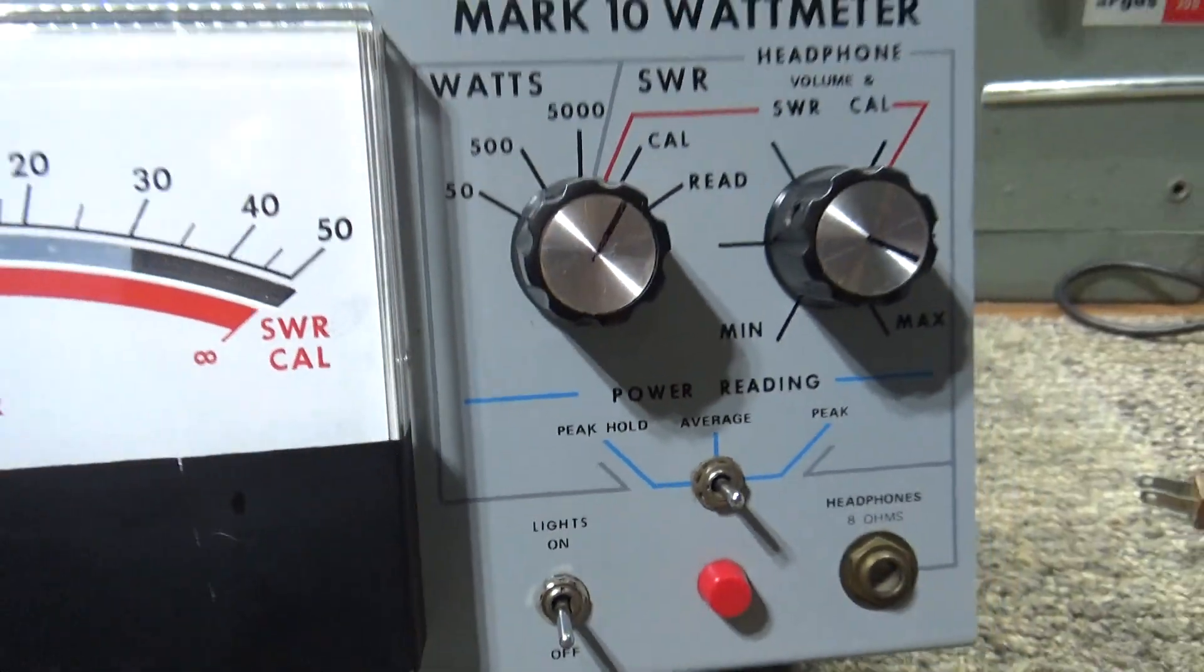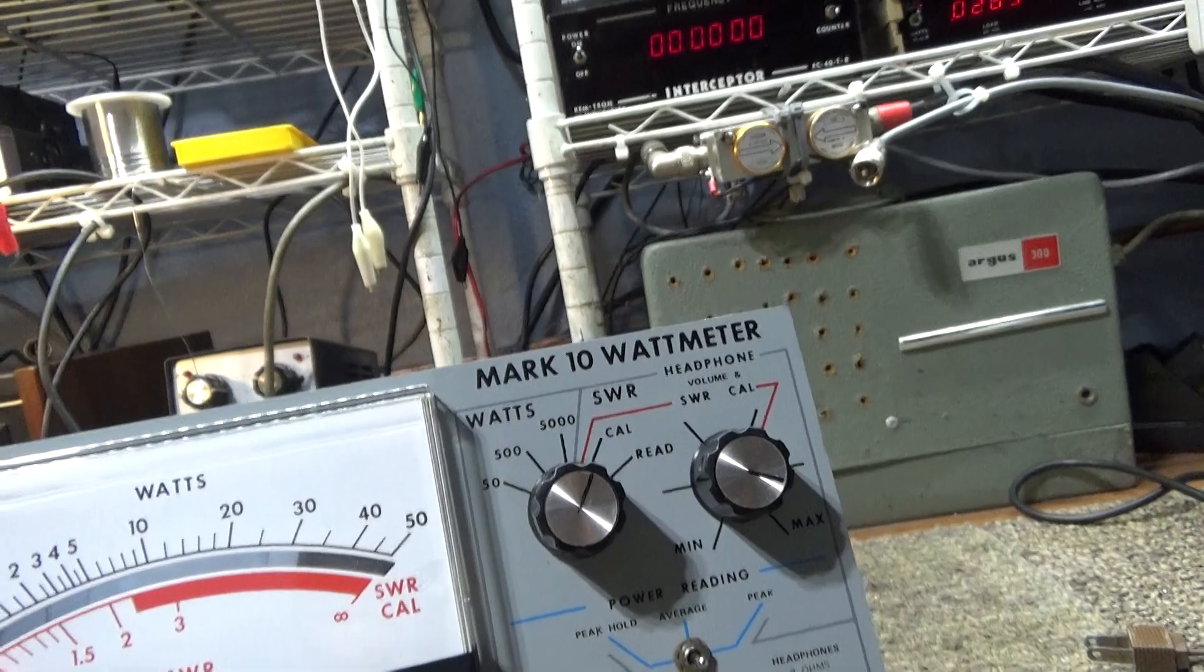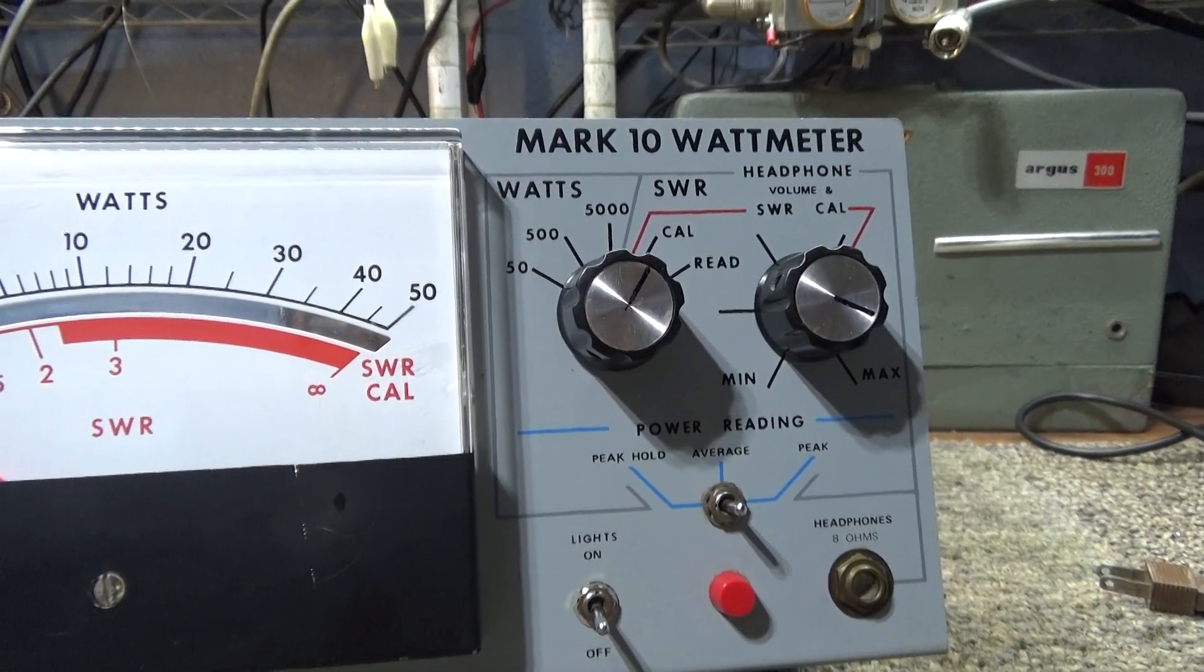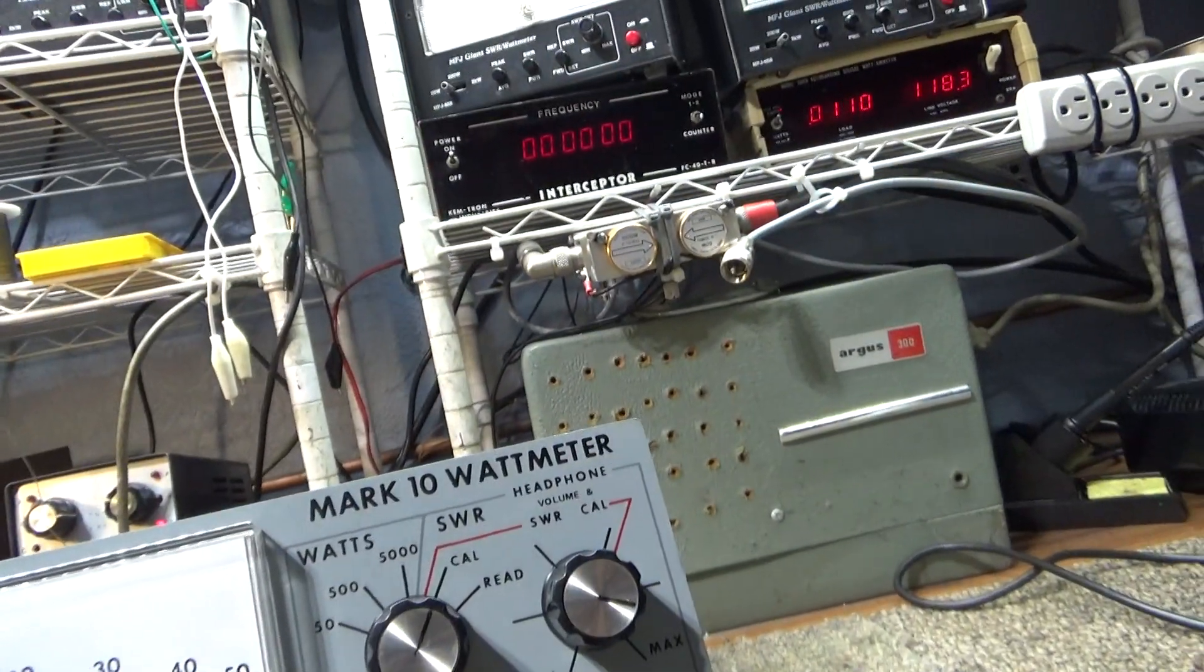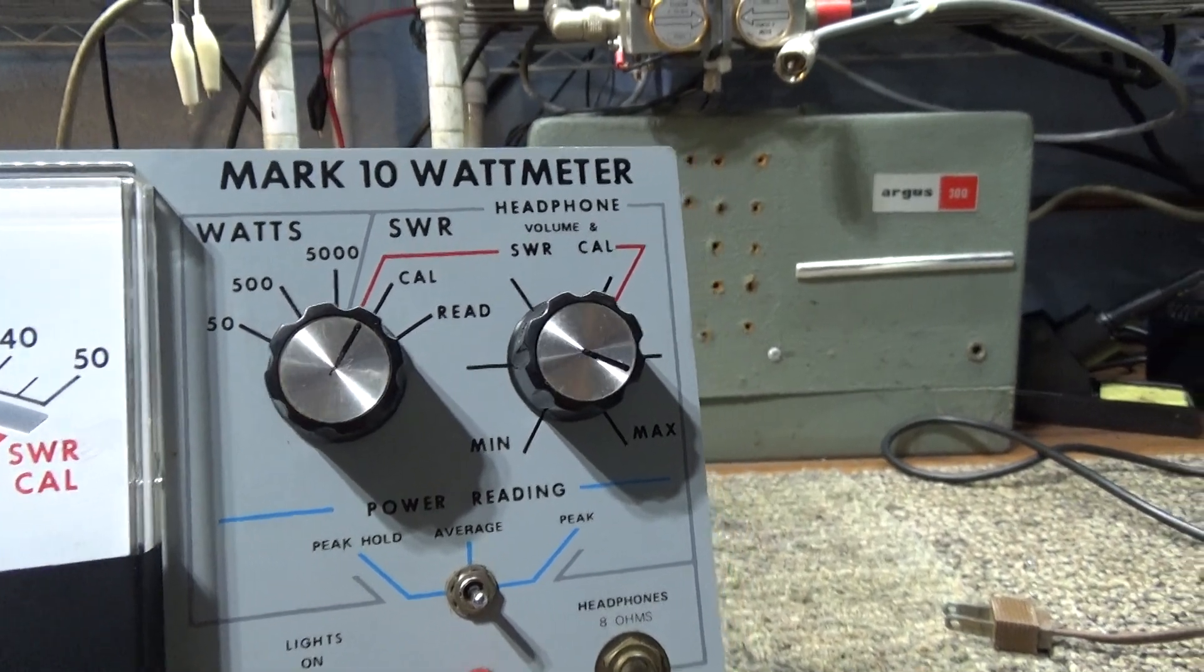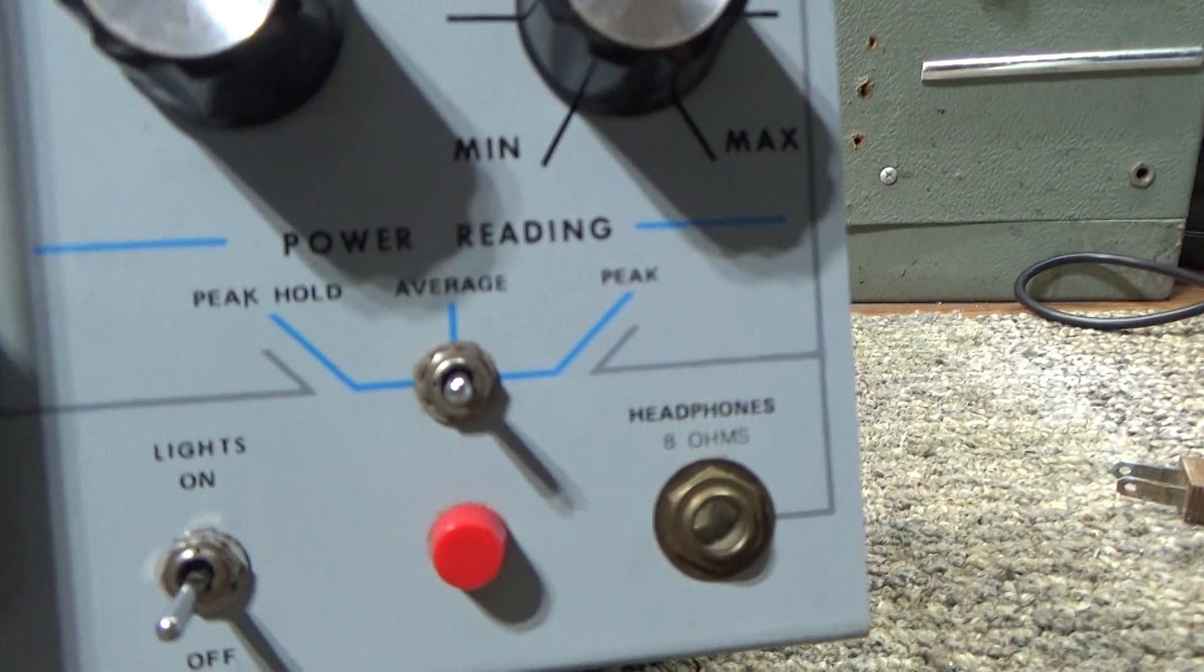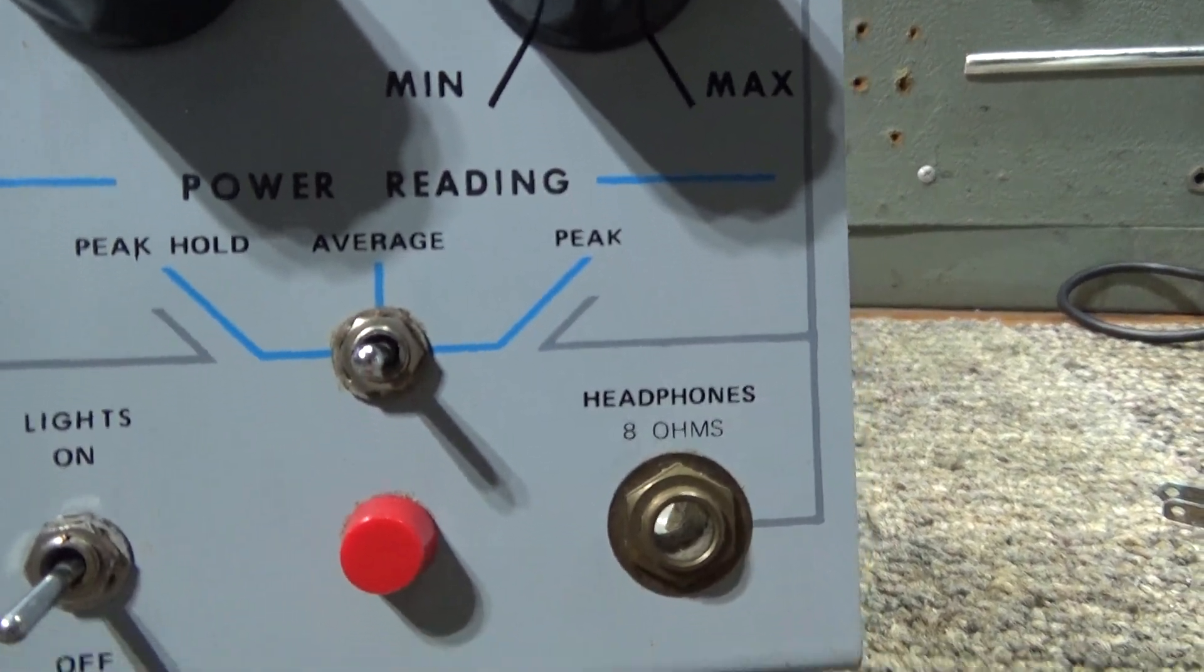The reason I did this video, my latest toy, always wanted one of these, and I finally got one off eBay. Transale Mark 10 Watt Meter. Just a big face watt meter, nothing special. It says 5,500, 5,000 watts, SWR calibrate, SWR average peak and peak hold, and a headphone jack.